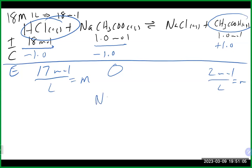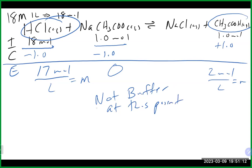Obviously we no longer have a buffer at this point. We would see a big decrease in pH — it would drop way low because there's a ton of H⁺ in the solution now. This illustrates why when you make a buffer, you want to think about how many moles of the acid and base are present, and whether that's enough to handle any additional acid or base you add.